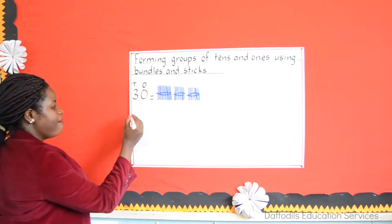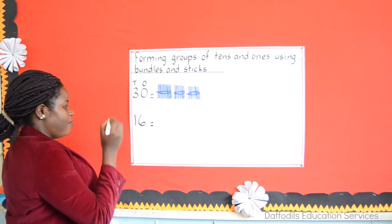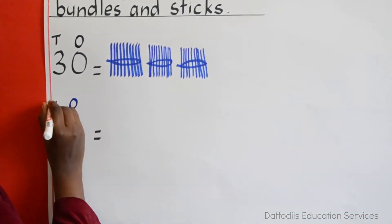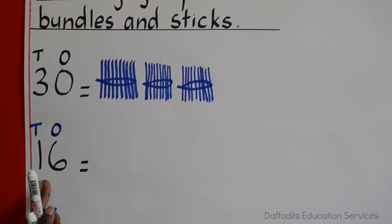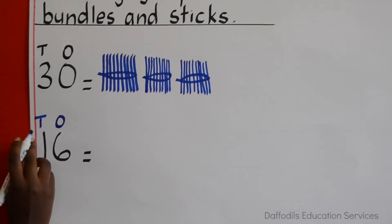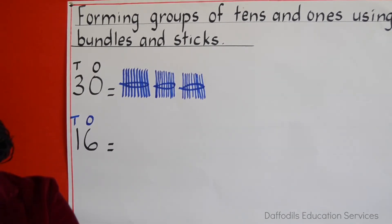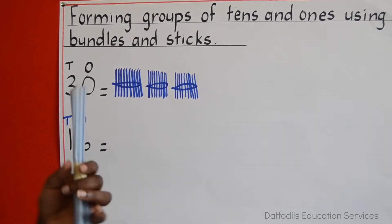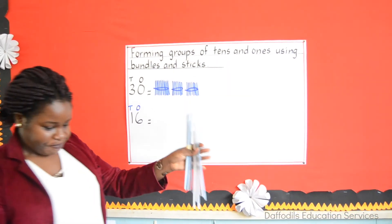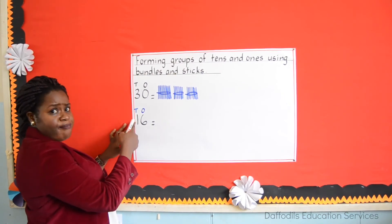Now I'm giving you another example. If I have the number 16, how do we draw bundles and sticks? The first thing you do is allocate place values — don't forget putting the place values. These help you to know how many bundles to draw and how many sticks to draw. You can see my number 16: I have 1 ten and 6 ones. That means I'll need 1 bundle of 10 and 6 ones.